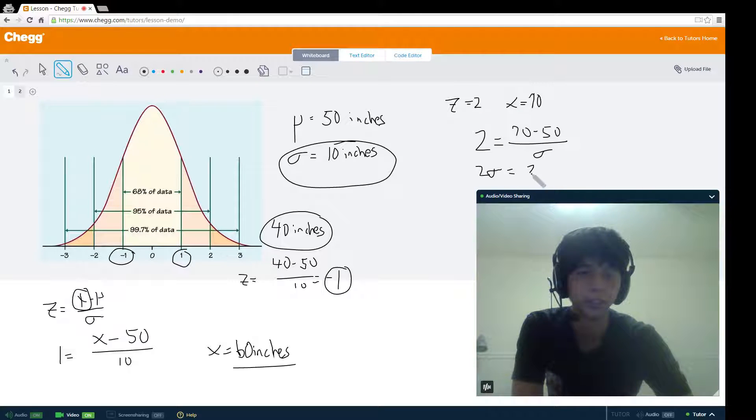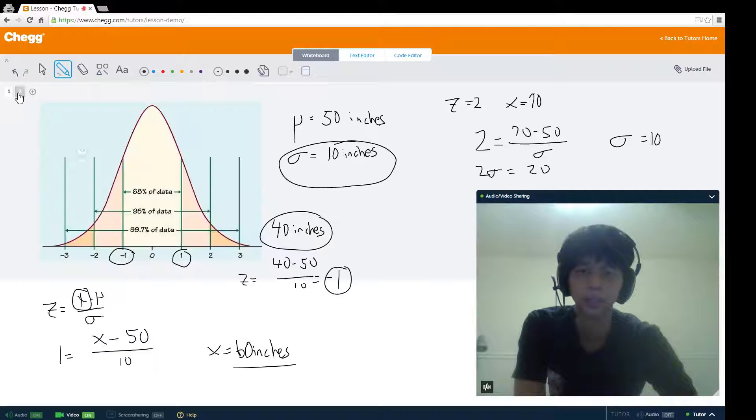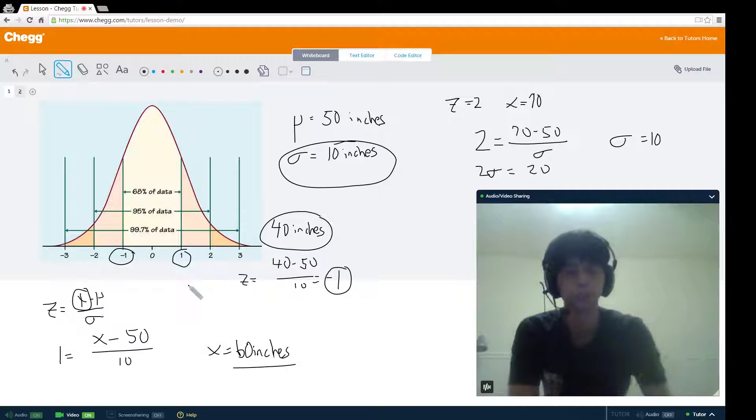2 times your standard deviation equals 20, so your standard deviation ends up being 10. Using this z-score formula that we've learned in this video and your knowledge of how data is distributed in normal distribution according to z-scores, you can now answer several types of problems regarding z-scores.